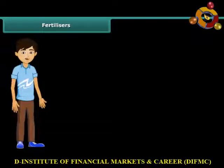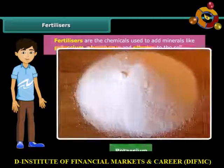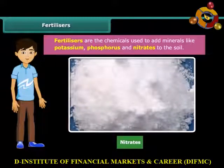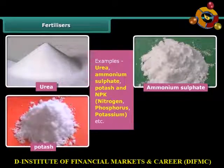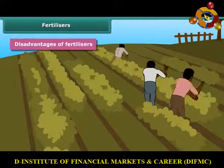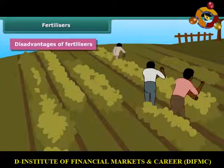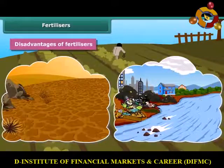Like manure, fertilizers are also used in replenishing the lost nutrients and minerals in the soil. Fertilizers are chemicals used to add minerals like potassium, phosphorus and nitrates to the soil. Fertilizers are produced in factories. Some examples of fertilizers are urea, ammonium sulfate, potash and NPK — nitrogen, phosphorus and potassium. The use of fertilizers increases the crop yield. However, there are some disadvantages: excessive use of fertilizers makes the soil less fertile, and they have also become a source of water pollution.